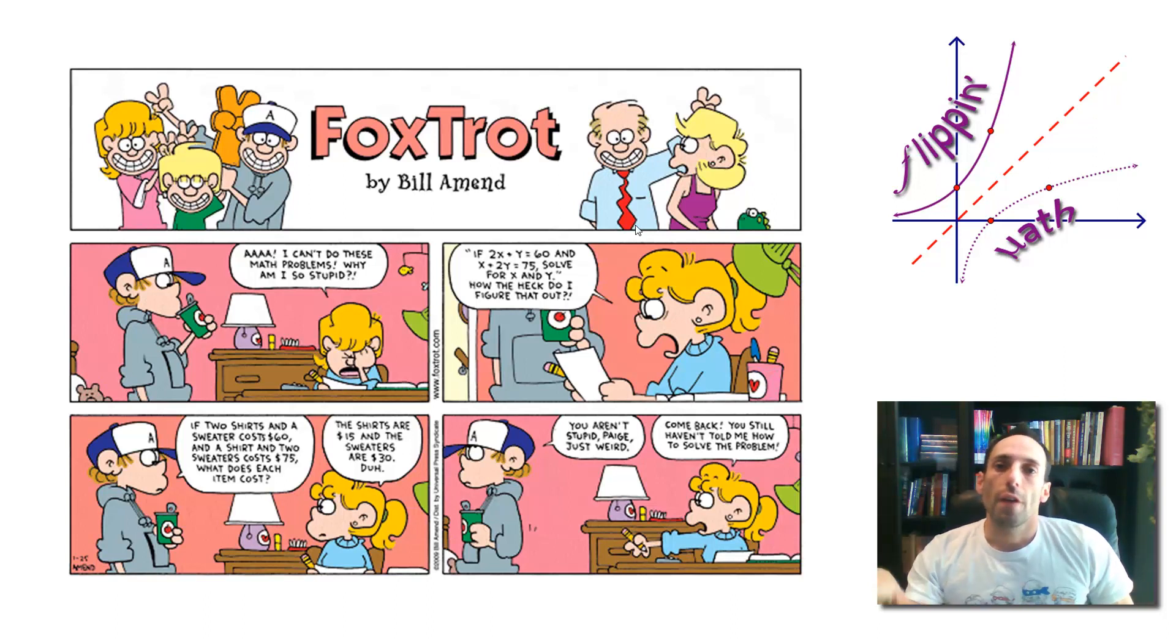So in this Foxtrot comic strip here, there's Peter and he's confronting Paige. She's trying to do her homework. She says, I can't do these math problems. Why am I so stupid? If 2x plus y equals 60 and x plus 2y equals 75, solve for x and y. How the heck do I figure that out?